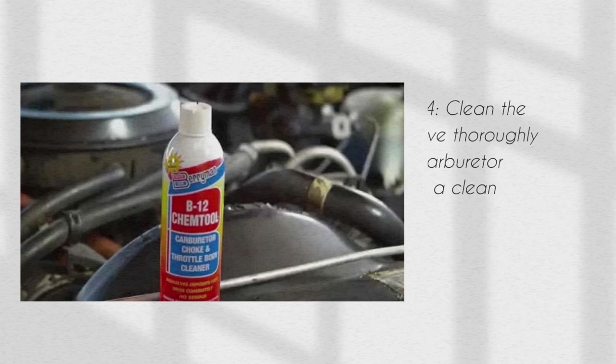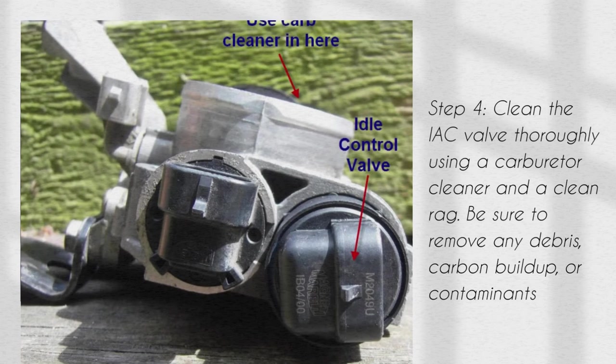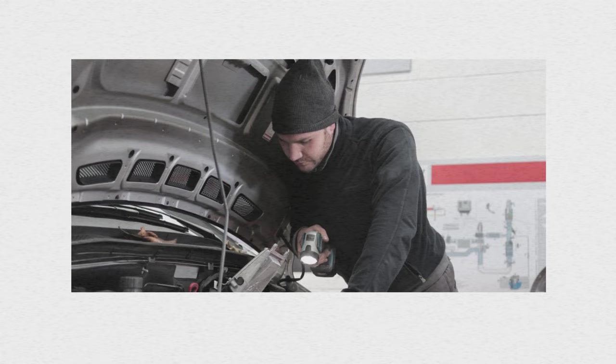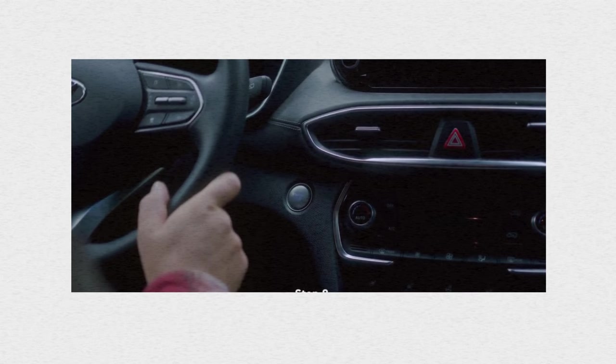Step 4: clean the IAC valve thoroughly using a carburetor cleaner and a clean rag. Be sure to remove any debris, carbon buildup, or contaminants. Step 5: reinstall the IAC valve onto the throttle body and reconnect the plug or wire harness. Step 6: reconnect the negative battery cable and start the engine. Allow the engine to idle for a few minutes to allow the computer to relearn the idle position.